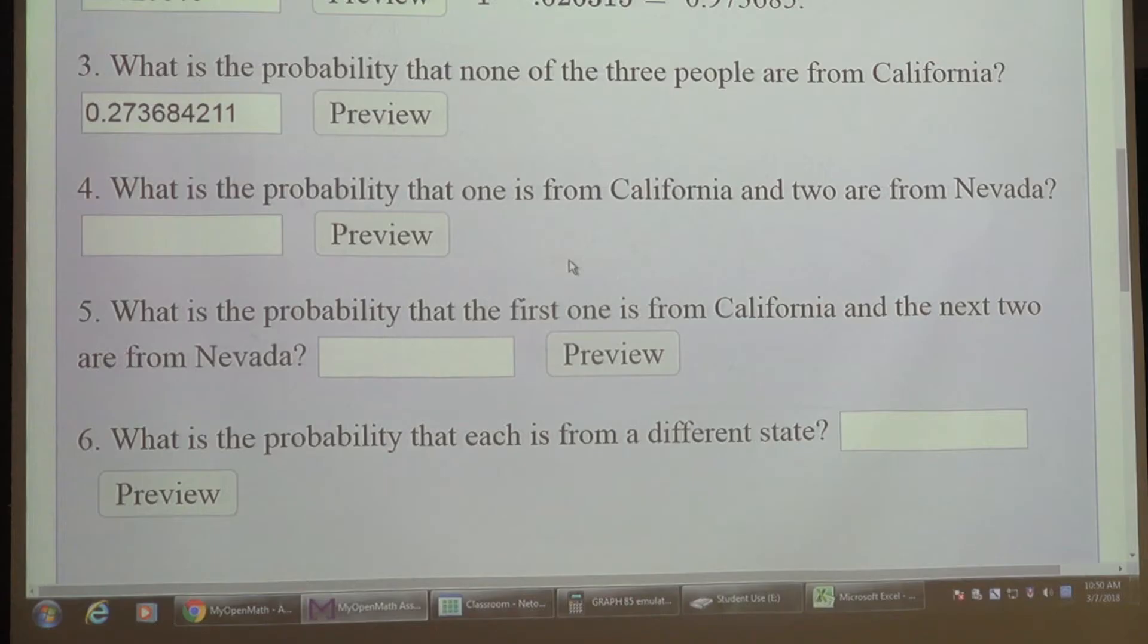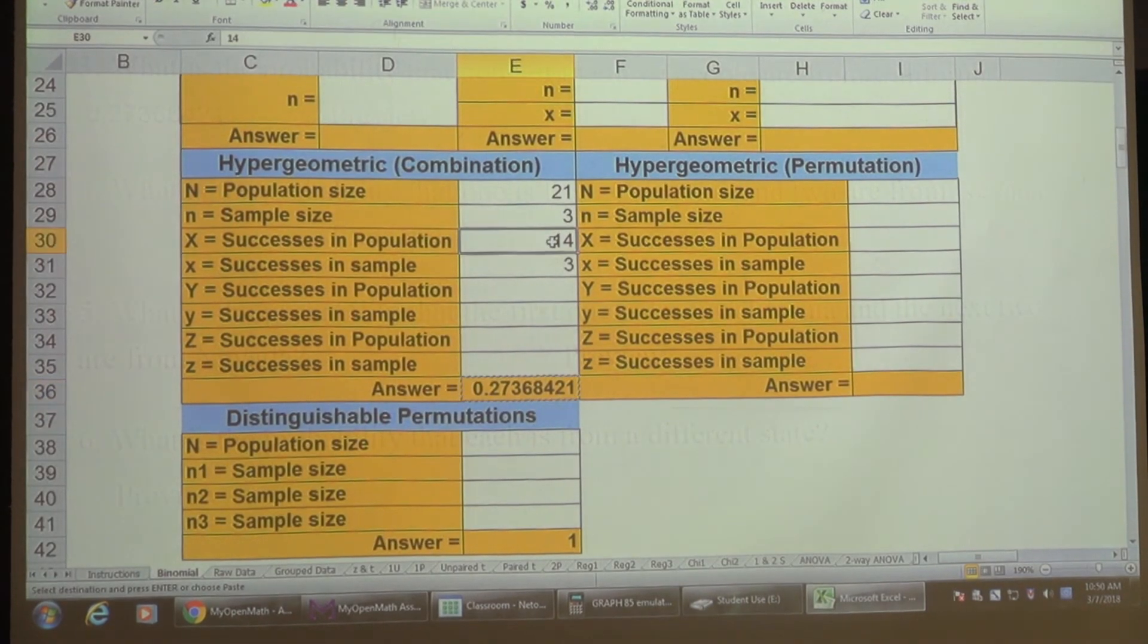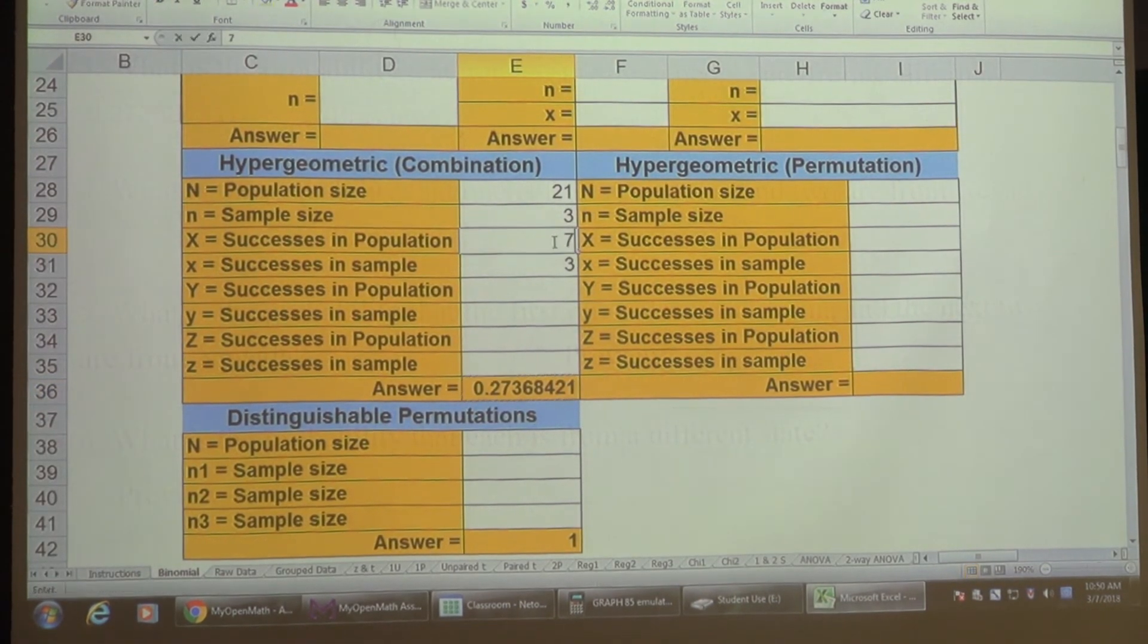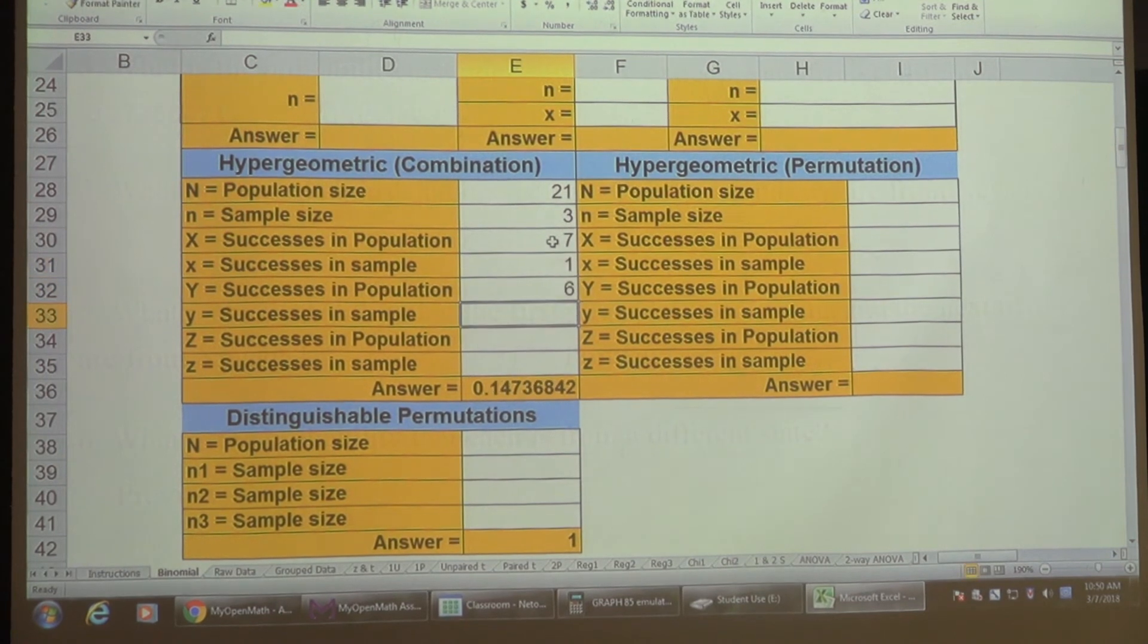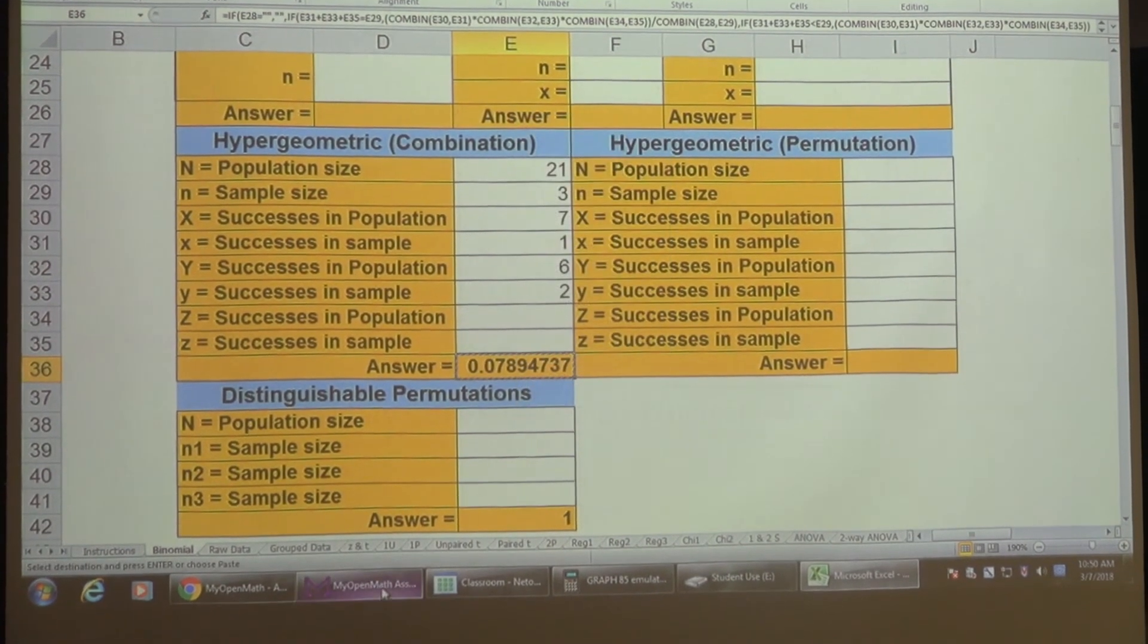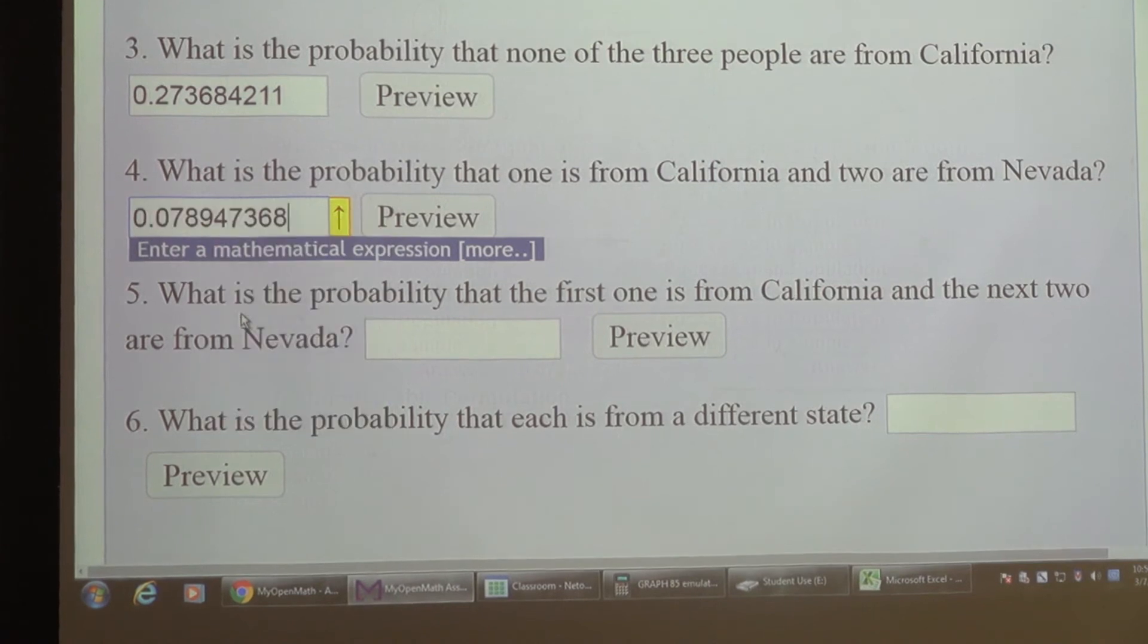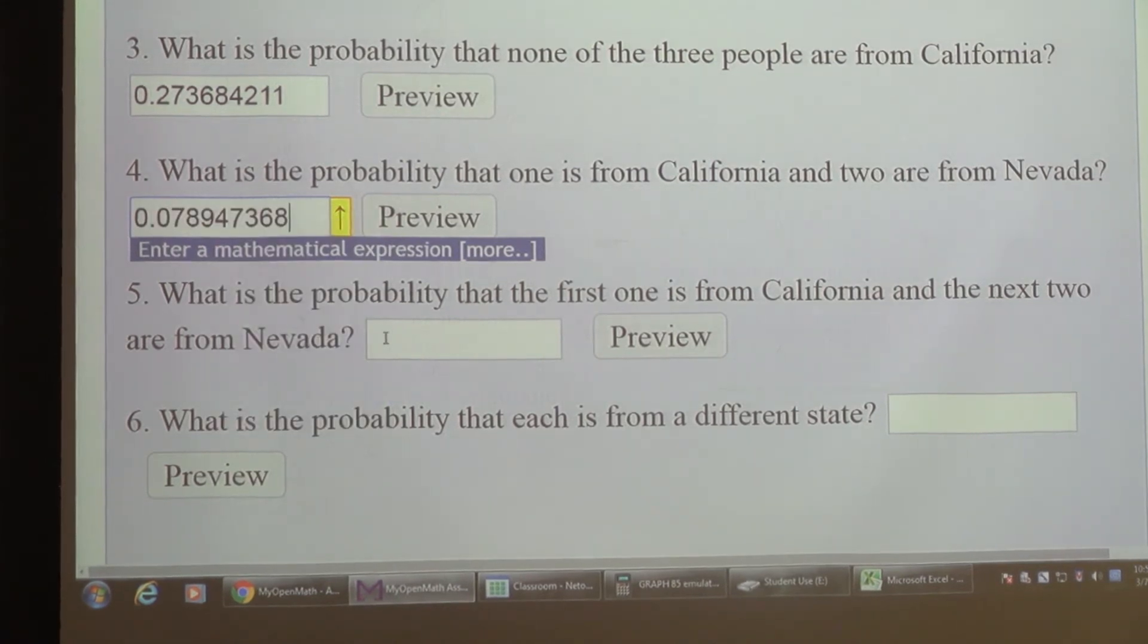So you just put this into the same section of the Excel sheet right here. 21, three, seven, one, and six, two. And there's that probability. Copy it. Paste it in. It saves you from doing all those fractions that we had before.